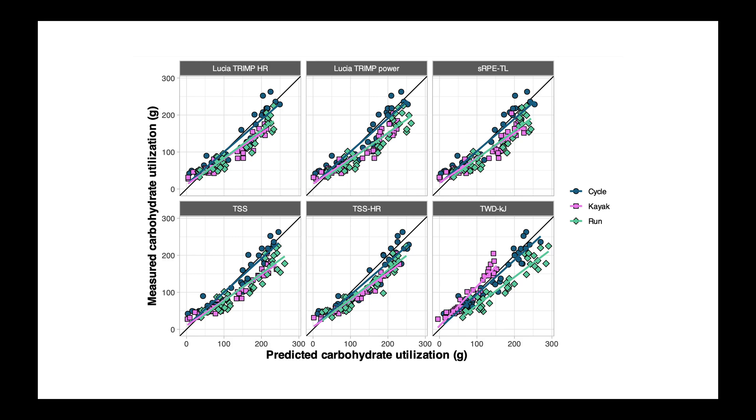Each color here represents a different sport, and each of the six blocks represents a different training load measure. Along the bottom of each graph is the model predicted carb use, and along the side are the measured actual values. The diagonal lines represent perfect predictions, meaning they match up exactly with the measured values. What we see is the blue dots, or cycling, are generally lining up quite well, and there's a bit of an offset, albeit a consistent one, with the kayak and run data. This is most apparent in the bottom right corner for total work done. The points are off, but in a consistent manner, likely due to differences inherent to the mode of exercise, differences in the measurement of work, or both.